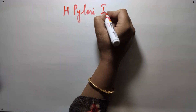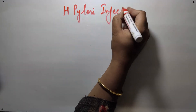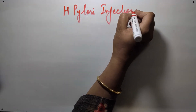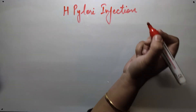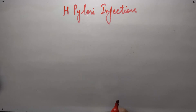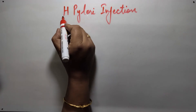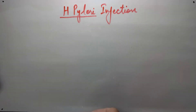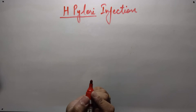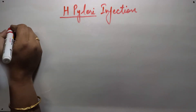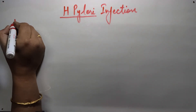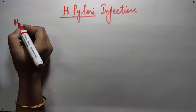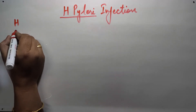H. pylori infection is the inflammation of the stomach and also ulcer formation in the stomach and the duodenum, caused by H. pylori bacteria, which is also called helicobacter pylori. This is the mnemonic for easy remembrance of the symptoms of this infection.